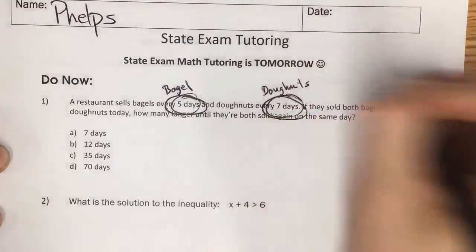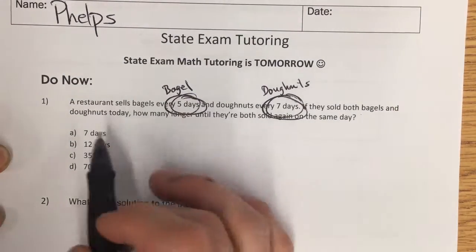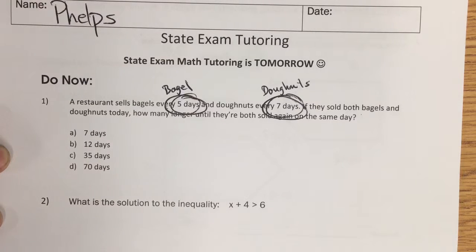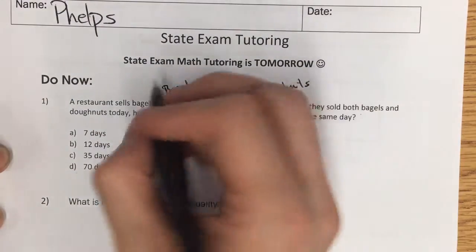Donuts over seven days. If they sold both bagels and donuts today, how much longer until they've sold both again on the same day? So we know bagels are every five days, donuts are every seven days. So let's look at bagels.